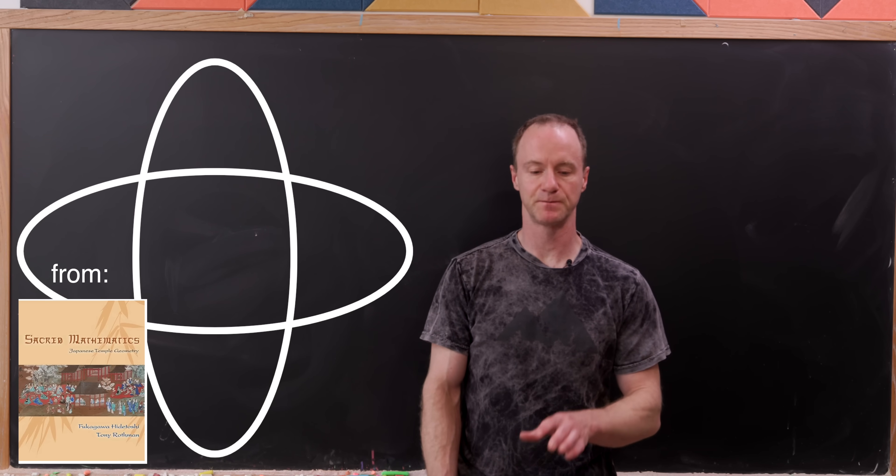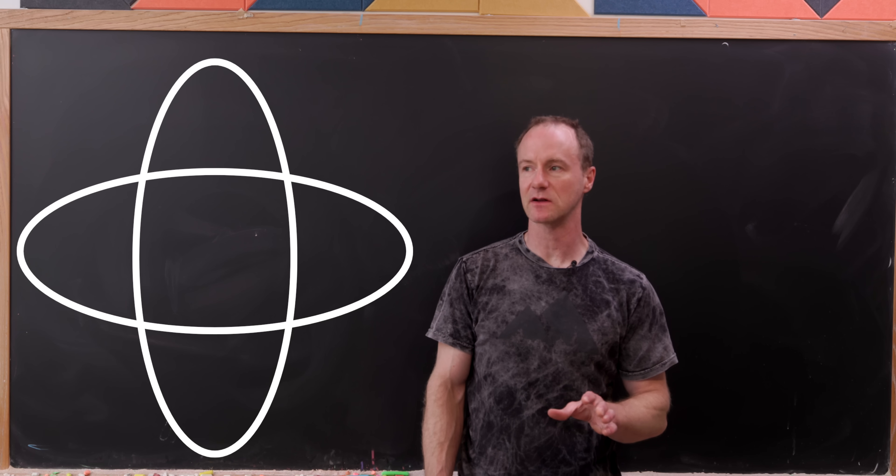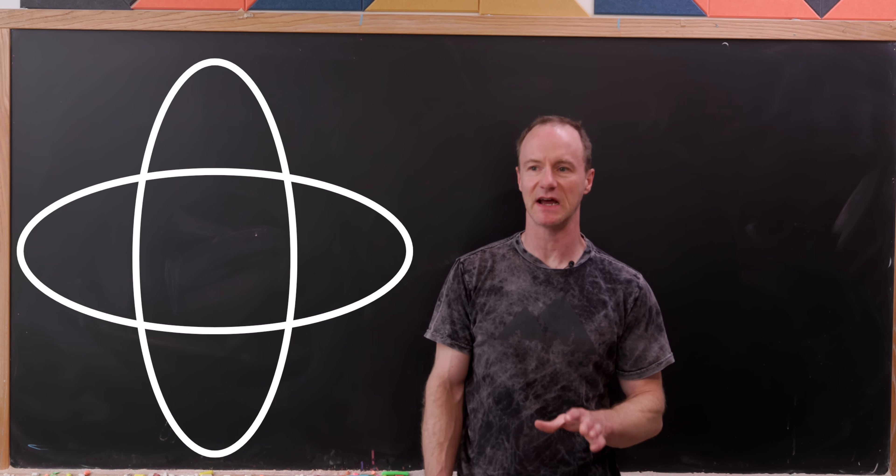Today I've got this really nice geometry problem. Let's say we've got two identical ellipses, one that's been rotated 90 degrees.